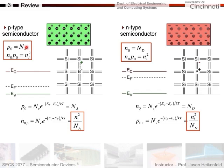As the number of holes goes up due to doping, the number of electrons goes down. We calculate this using the relationship: the product of electron and hole concentrations equals the intrinsic carrier concentration squared. For n-type material with phosphorus atoms, the phosphorus atoms are positively charged and can't move while electrons can move freely. As one concentration goes up, the other goes down, and the number of electrons equals the number of phosphorus atoms.